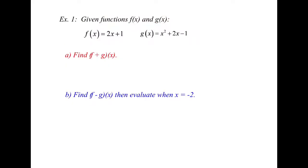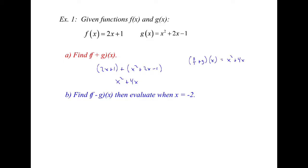Let's go back and look at example 1, given functions f(x) and g(x). f(x) is linear, g(x) is quadratic. Find f plus g of x. So we will take f(x), which is 2x plus 1, and add g(x). That will give us, in standard form, x squared plus 4x, and the 1's cancel. So f plus g of x is equal to x squared plus 4x.